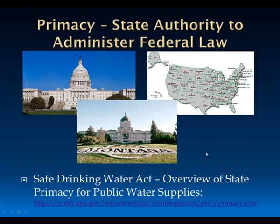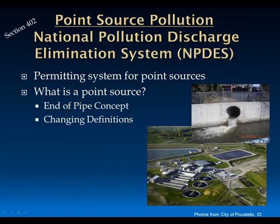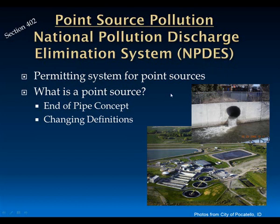An example is the Safe Drinking Water Act overview of primacy for states administering public water supplies. Point sources are dealt with through a permitting program. In Montana, we have the state water quality law—the Montana Clean Water Act. Point sources are dealt with under the National Pollution Discharge Elimination System (NPDES). In Montana, the N is replaced with an M for the Montana Pollution Discharge Elimination System (MPDES), which is basically a permitting system for point sources.